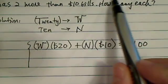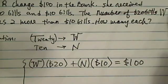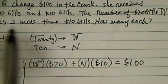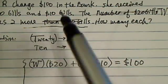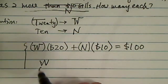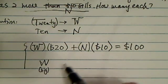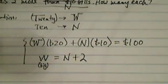The second equation, you go back and say the number of $20 bills, which we call W, was two more than the $10 bills. Because $10 bill was N, so W was bigger. The number of $20 bills was bigger by 2 when compared to $10 bills.